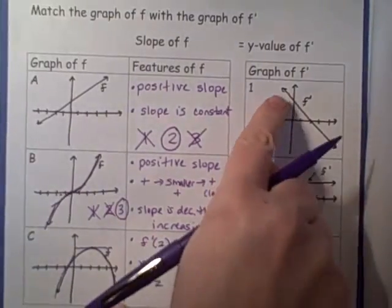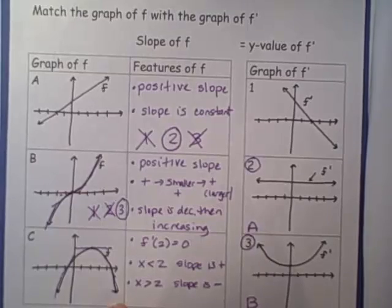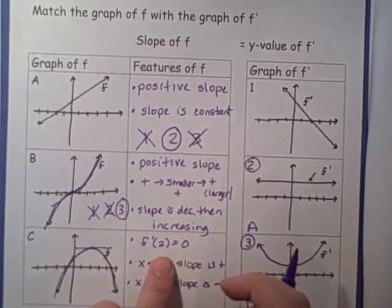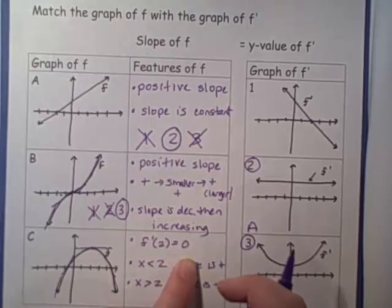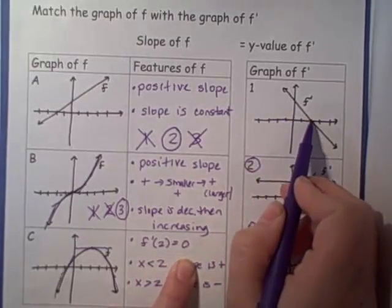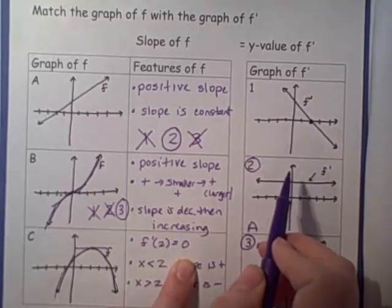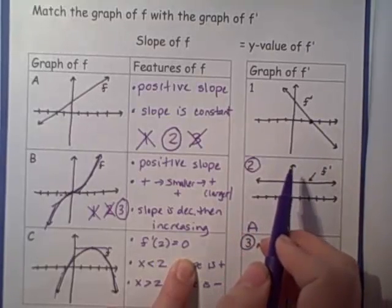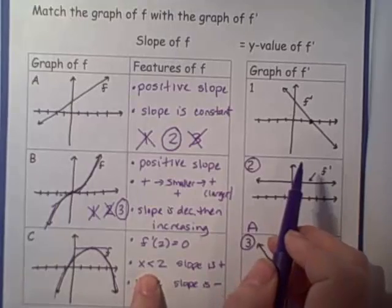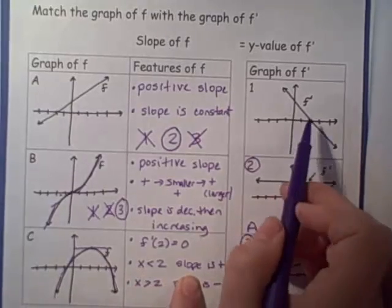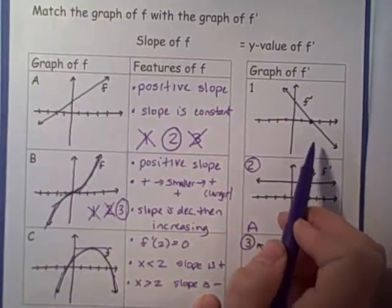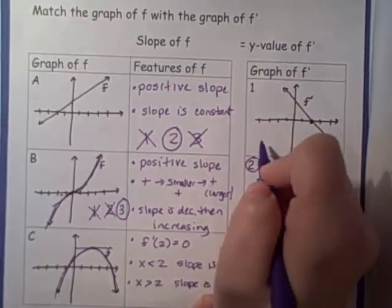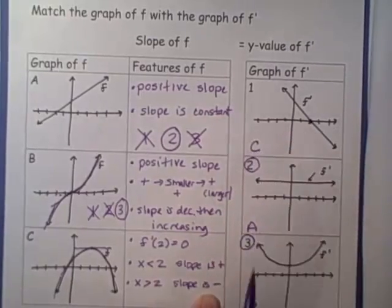By elimination, graph 1 has to match graph C. Let's verify: the y-value at x equals 2 is zero — and looking at graph 1, at x equals 2, the y-value of f prime is zero. For x less than 2, the y-values are positive — and over here the y-values are positive. For x greater than 2, the y-values are negative — and over here the y-values are negative. So graph 1 is definitely graph C.